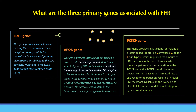The third is the PCSK9 gene, which provides instructions for making a protein called proprotein convertase subtilisin/kexin type 9, which regulates the amount of LDL receptors in the liver. When there is a gain-of-function mutation in the PCSK9 gene, the PCSK9 protein becomes overactive. This leads to an increased rate of LDL receptor degradation, resulting in fewer LDL receptors available on liver cells to clear LDL from the bloodstream, leading to hypercholesterolemia.